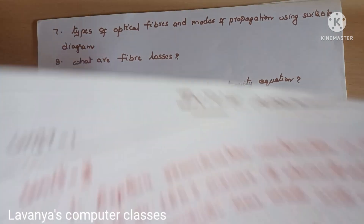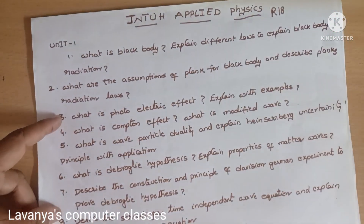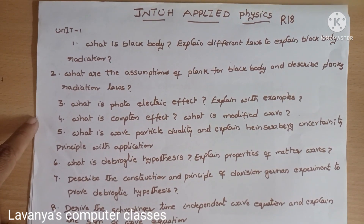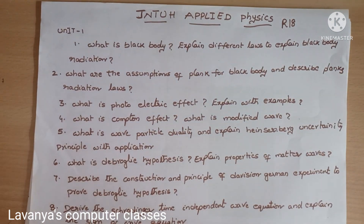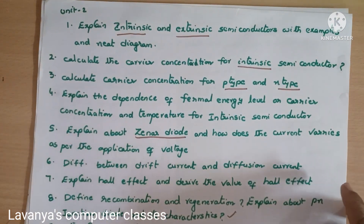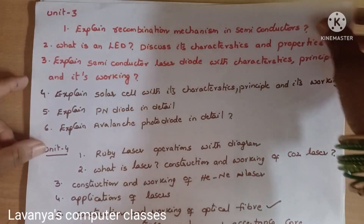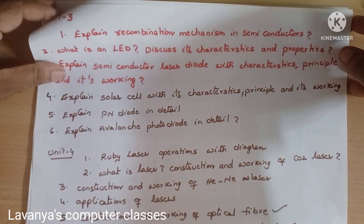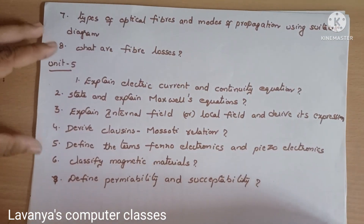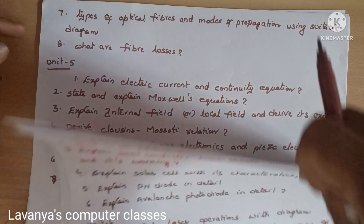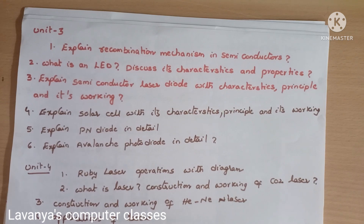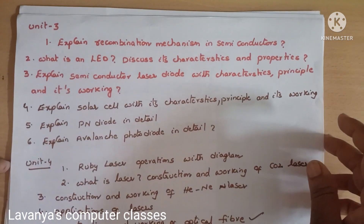These are all the important questions in applied physics. Unit 1 has 9 questions, Unit 2 has 9 questions, Unit 3 has 6 questions, Unit 4 has 8 questions, and Unit 5 has 7 questions. Read all the questions, select any 3 and a half units properly, and it will be very easy to write the applied physics exam.